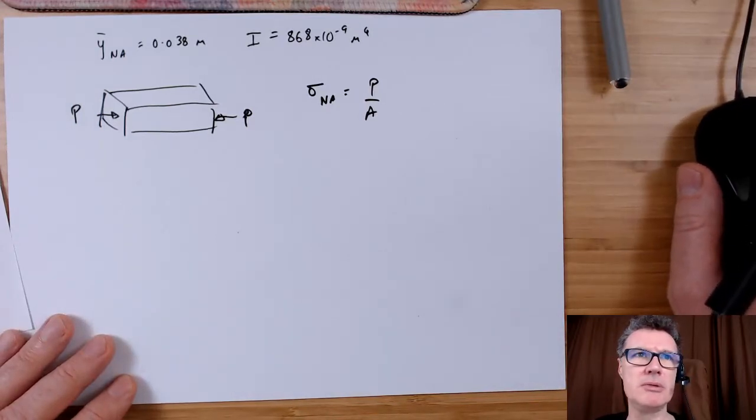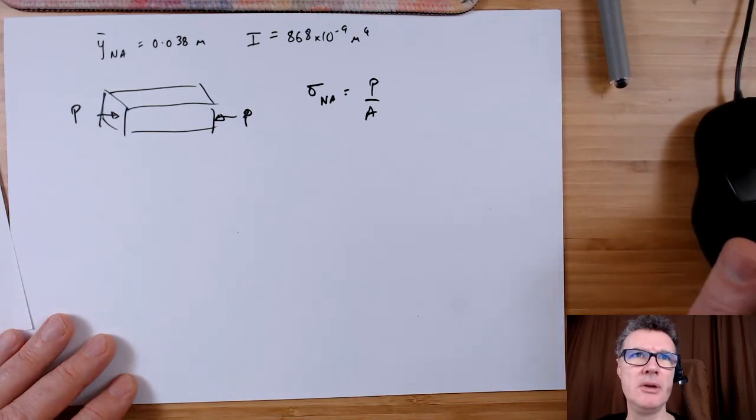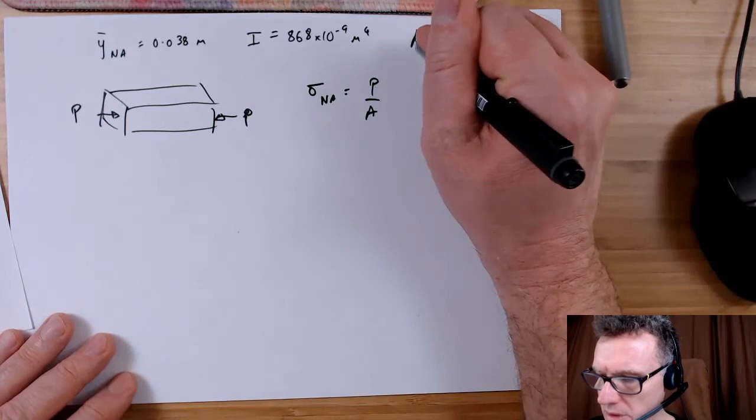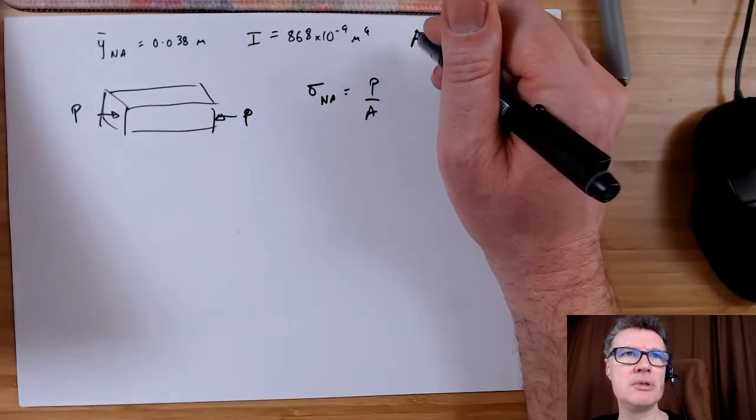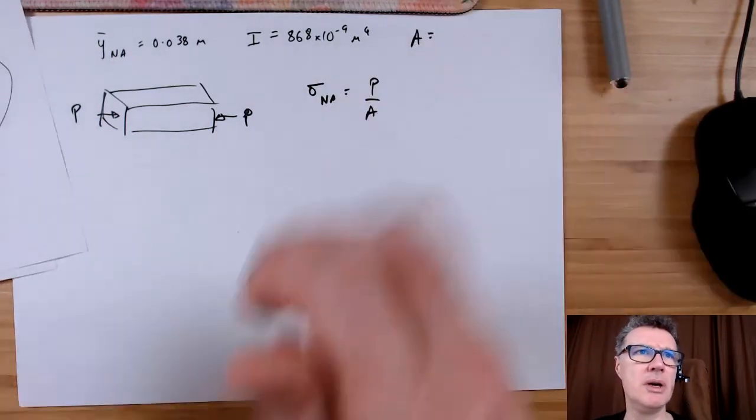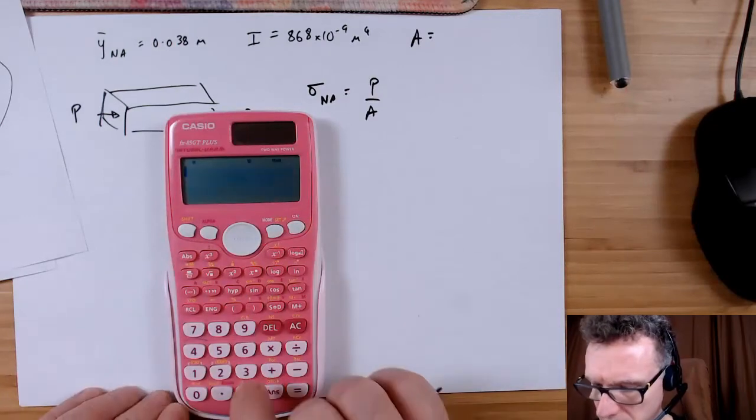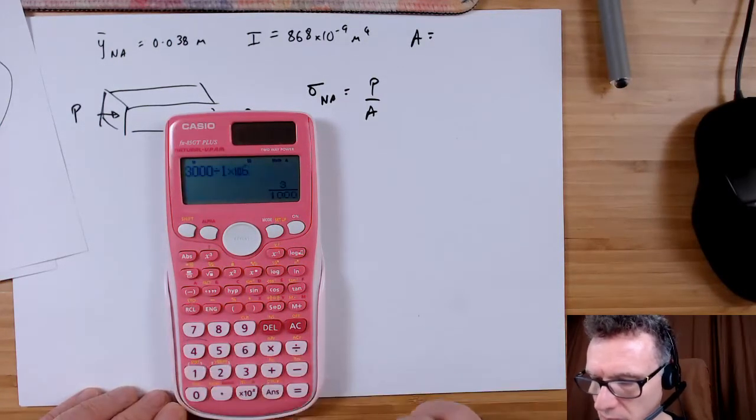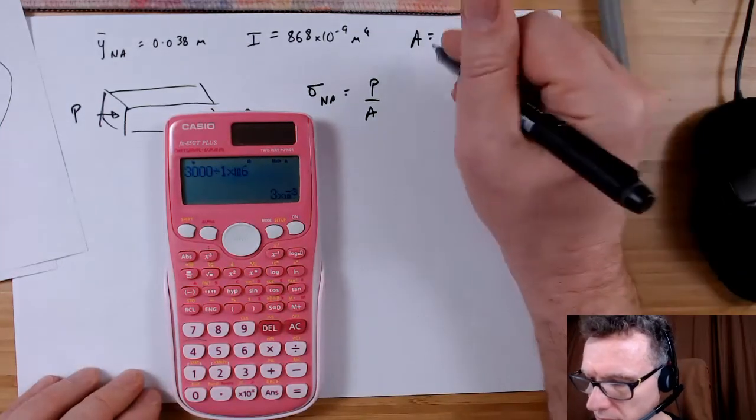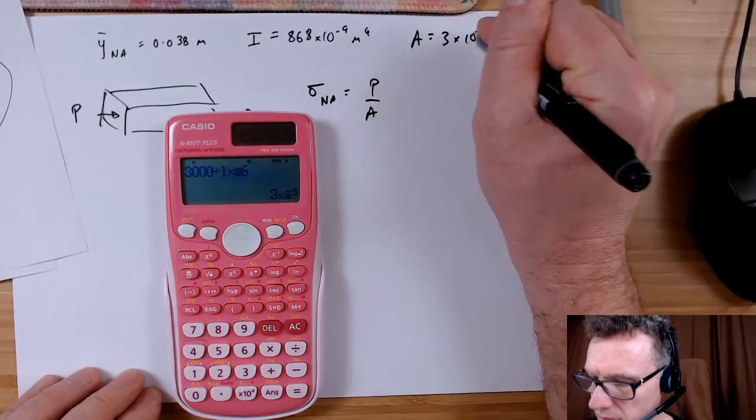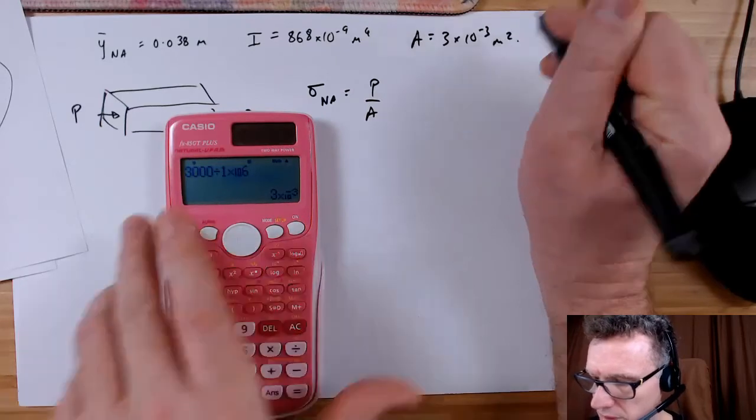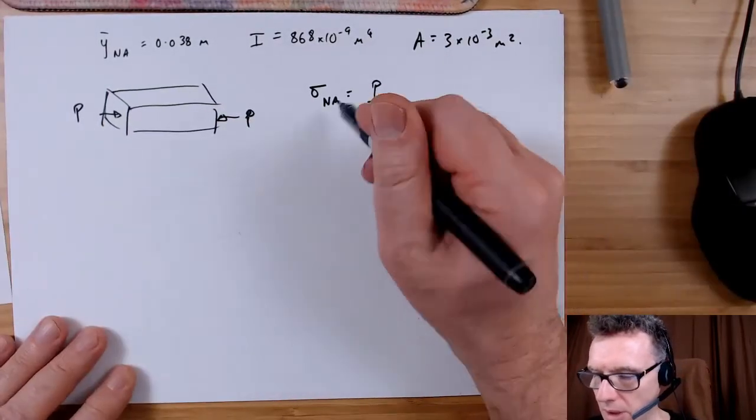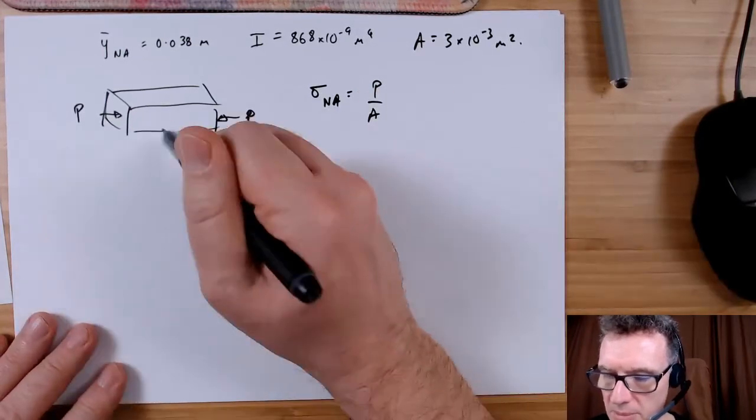Area was 3000 millimeters squared, so 3 times 10 to the minus 3 meters squared. So I know that stress, but the problem is the stress at the bottom and the top is going to be slightly different.